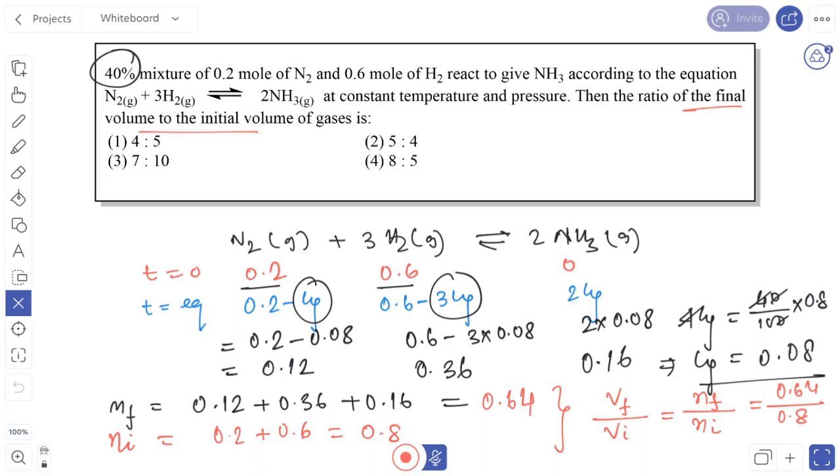Now we get the ratio is 0.8, which is 8 by 10, that is 4 by 5. So the answer is 4 by 5. Thank you.